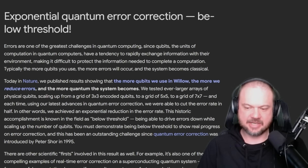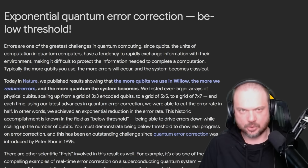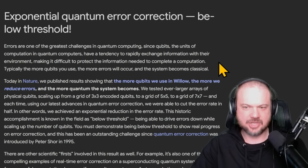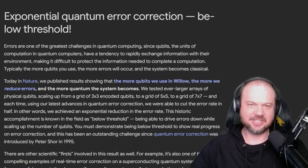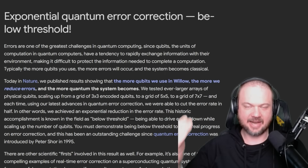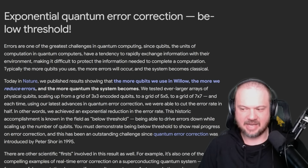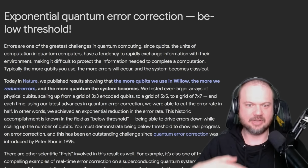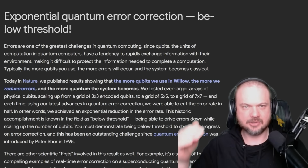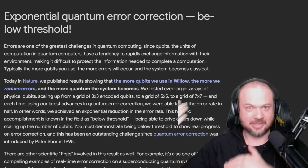The big deal here is what they refer to as 'below threshold.' With quantum computers, there's a tendency to rapidly exchange information with the environment — that's essentially the error rate. The data is not protected, and as you add more qubits and try to scale up, that error rate goes through the roof. Below threshold is the opposite: are we able to reduce the number of errors as we increase the number of qubits? Computational power goes up, errors go down at a greater rate than is caused by increasing computational ability.